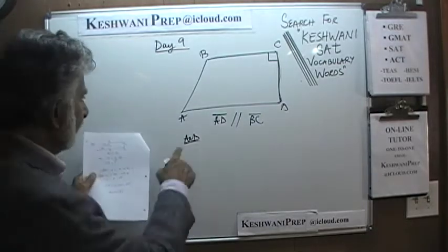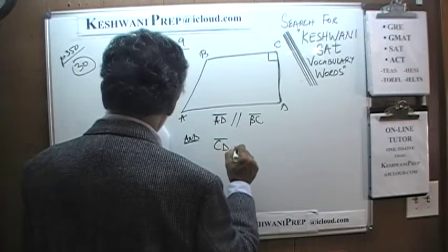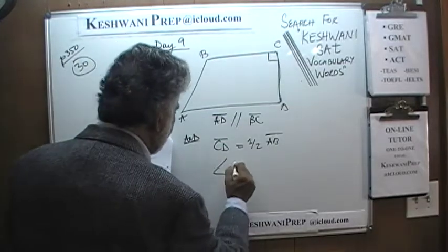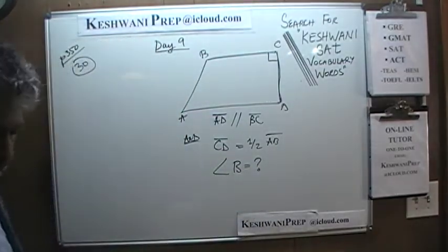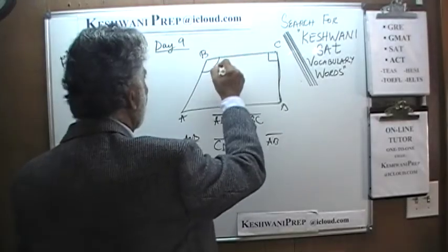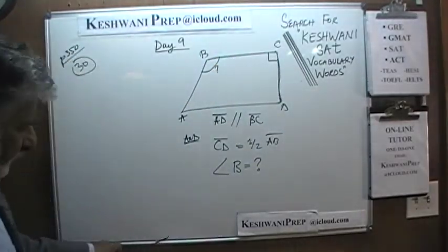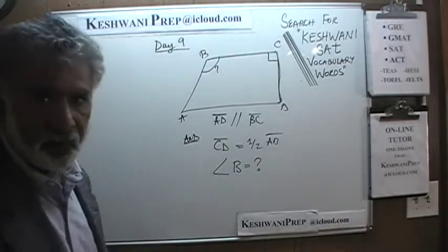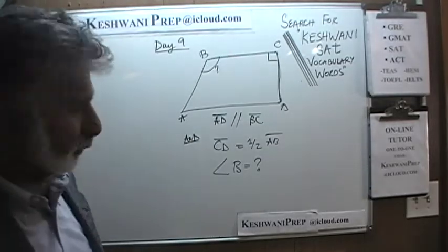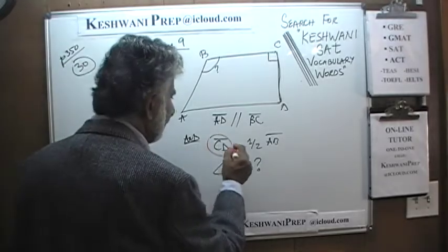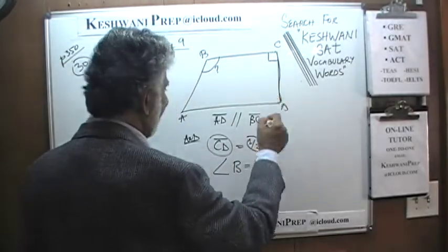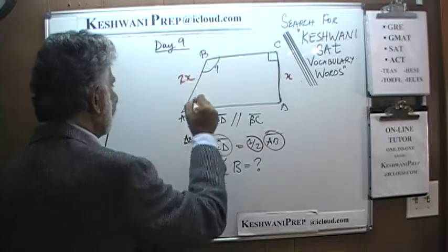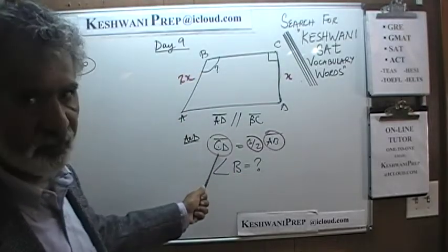We are told that line CD happens to be half the length of line AB. The question simply is, based on this information, what is the measure of angle B? Let's introduce the information given to us. We'll do it in red pen so we can differentiate what we are adding. We know CD is half the length of AB. Why don't we make CD equal to X? If CD is X inches long, then AB will have to be 2X.